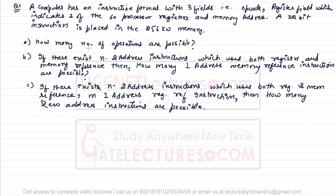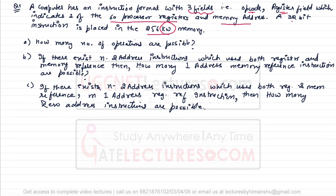Consider this case: a computer has an instruction format with three fields — the operation code, a register field indicating one of 60 processor registers, and a memory address. A 32-bit instruction is placed in 256 kiloword memory. Part one: how many operations are possible? Part two: if there exist n two-address instructions which use both register and memory reference, then how many one-address memory reference instructions are possible?